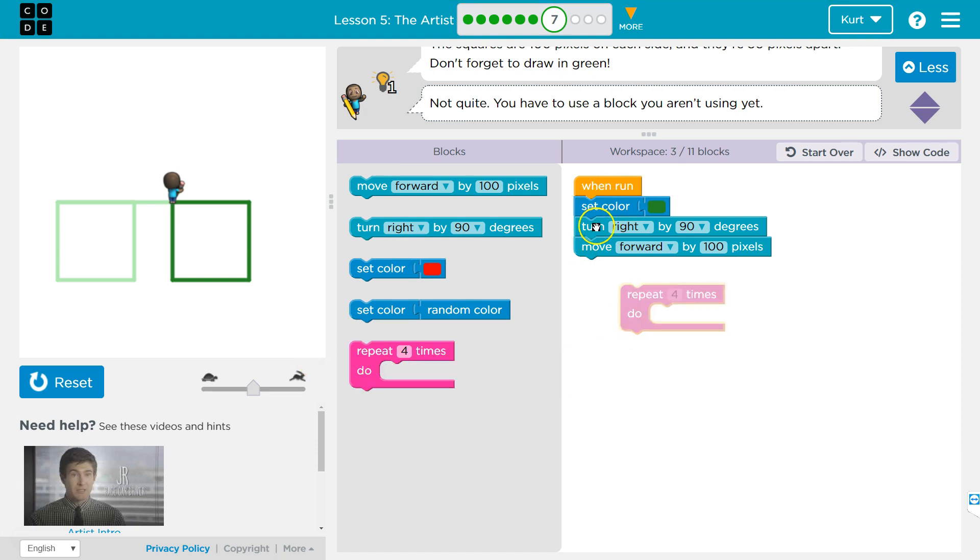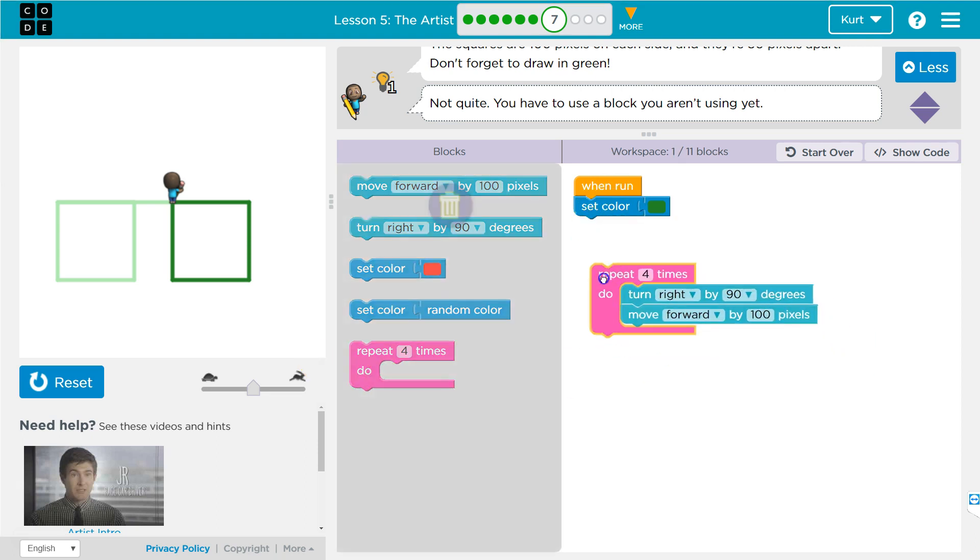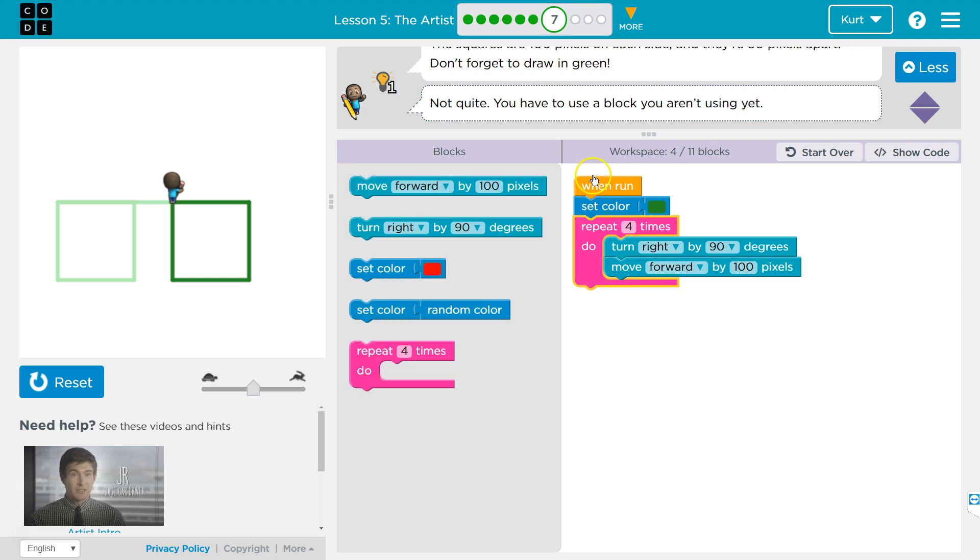I don't need to set the color four times, right? Once we do that, that's fine. So now the computer will, when I hit run, set the color to green, and then repeat four times. It's going to run everything in this pink mouth block thing.